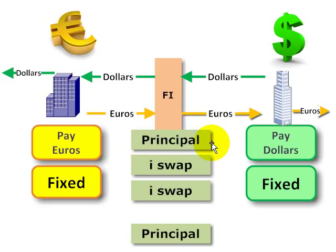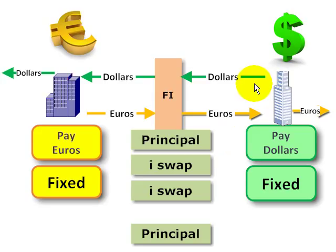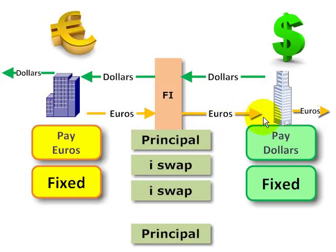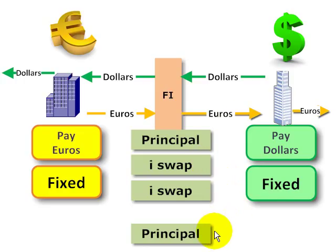Then at typically six-month intervals, the counterparties exchange interest payments. In this fixed-for-fixed version, this counterparty is paying a fixed rate of interest in dollars on the principal via a financial intermediary to the other counterparty, and that counterparty is paying a fixed rate in euros on the principal via the intermediary back. So from the beginning, both counterparties know exactly what the principal exchange and interest rate payments will be.